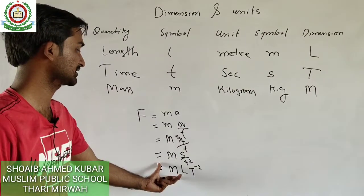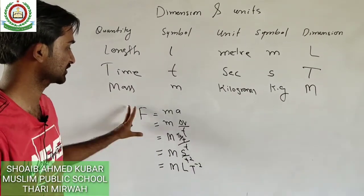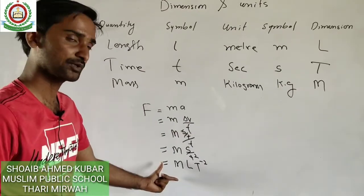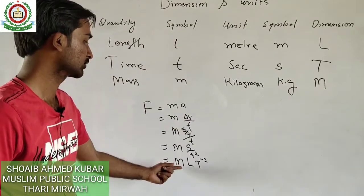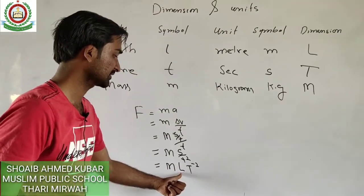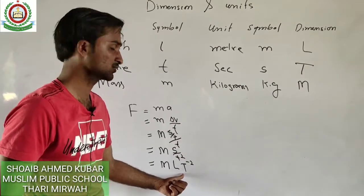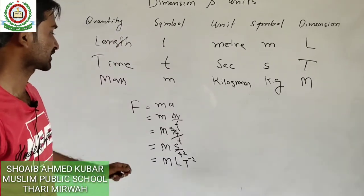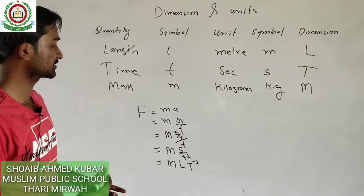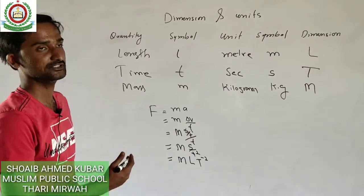So the dimension of force is MLT⁻², meaning it involves mass, length, and T squared. This is the dimension of the physical quantity force, revealing its nature in terms of the fundamental dimensions.